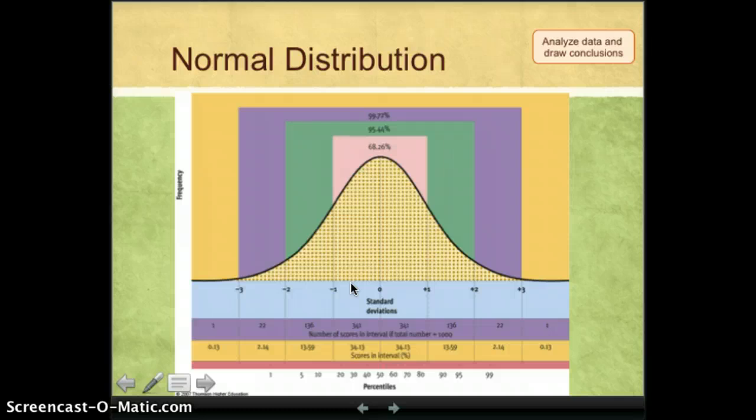Scores that lie outside this area, greater than two, less than negative two, would be considered statistically abnormal. They would be weird.